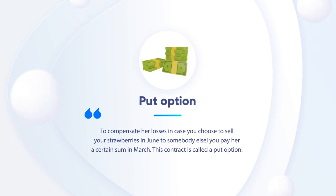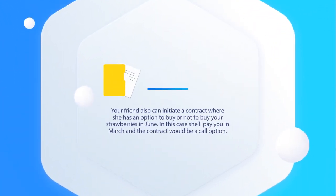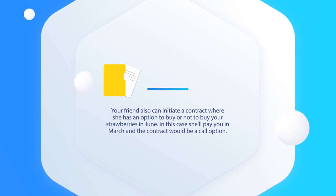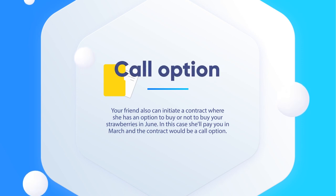This contract is called a put option. Your friend also can initiate a contract where she has an option to buy or not to buy your strawberries in June. In this case, she'll pay you in March and the contract would be a call option.